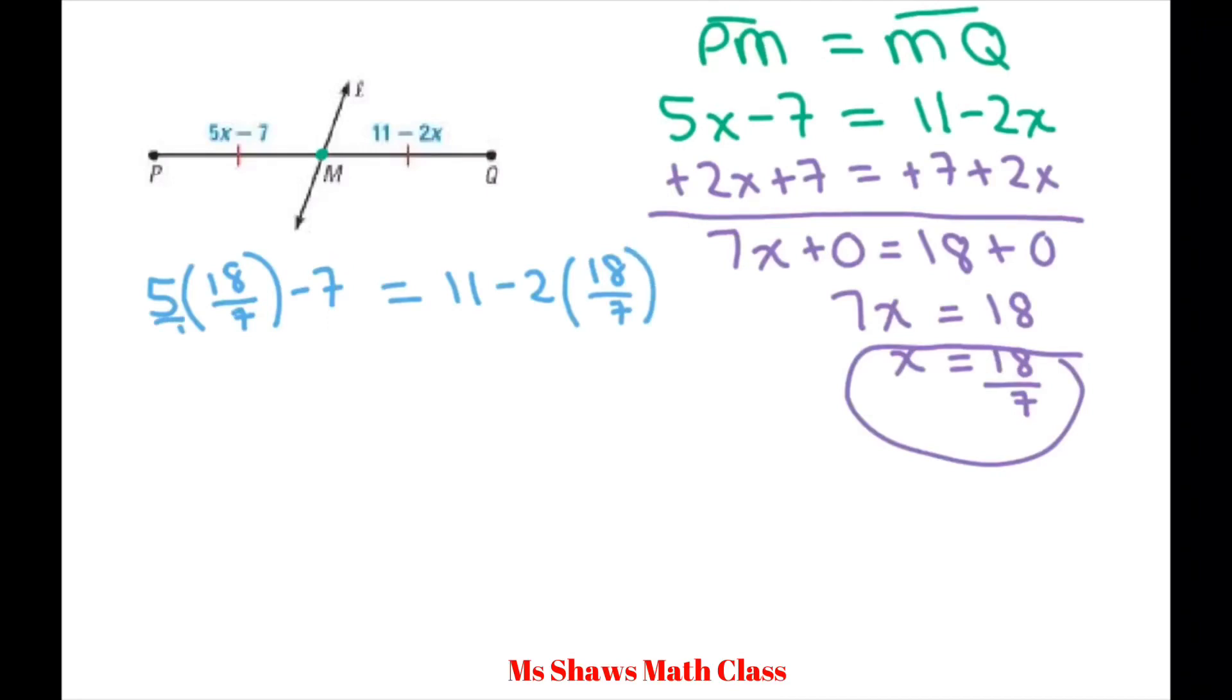You can put these in fraction form to make it a little easier. So you multiply across: 5 times 18 is 90 divided by 7 minus 7 divided by 1 equals 11 divided by 1 minus 36 divided by 7. Now you need to have the same denominator when you're adding and subtracting fractions. So that's going to be 7.